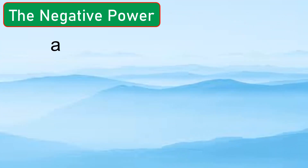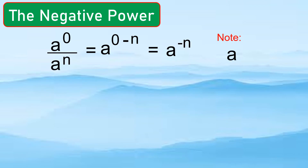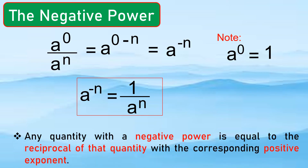Next, the negative power. Let us derive where it comes from. a to the 0 over a to the n — applying the quotient law gives a to the 0 minus n, and 0 minus n is negative n. Since any number raised to 0 equals 1, we get a to the negative n equals 1 over a to the positive n. Any quantity with a negative exponent equals the reciprocal of that quantity with the corresponding positive exponent.